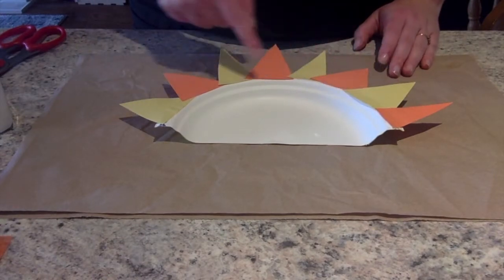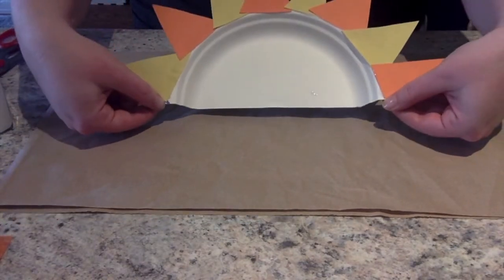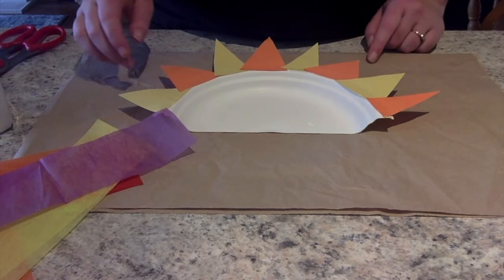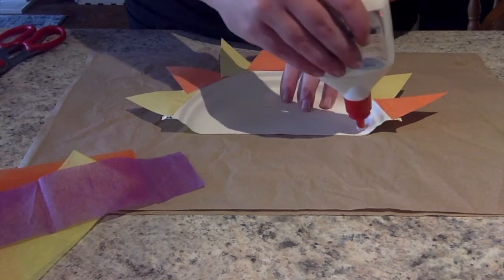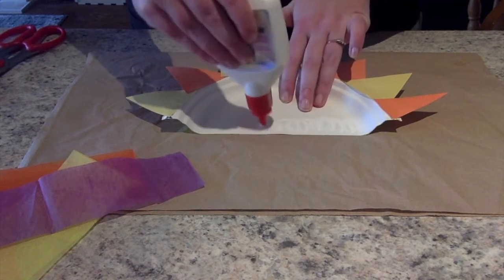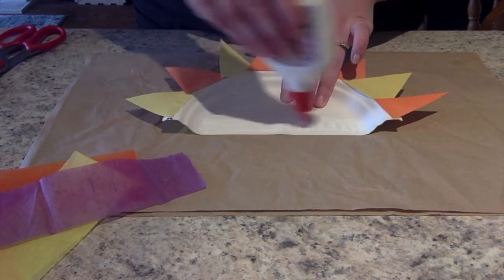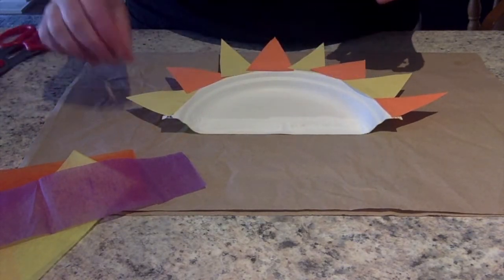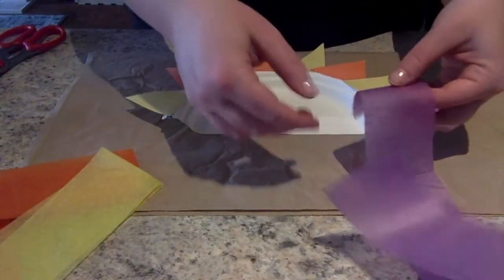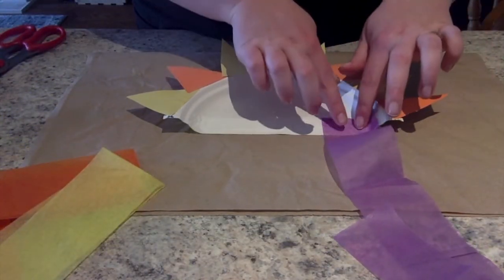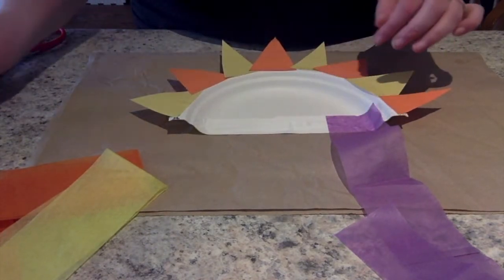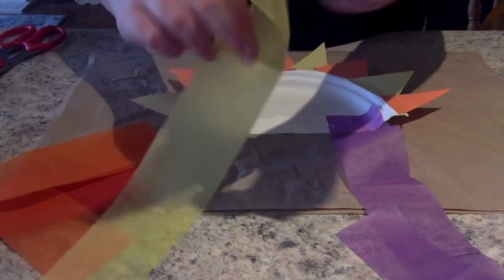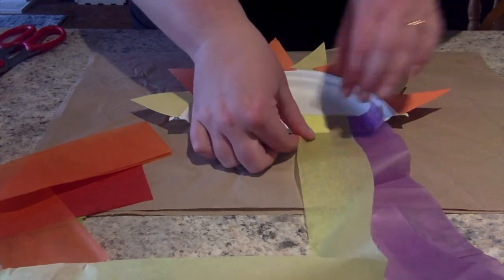When you've attached all of your triangles onto the back of your paper plate and given it a chance to dry, we're going to start attaching our tissue paper pieces for the rainbow. So what we're going to do is add a little bit of glue to the bottom of the paper plate where we originally cut it in half, and you are going to start sticking your tissue paper pieces one by one to the glue. So you can overlap them a little bit if you want, or you can alternate your different colors, however you'd like to do it.